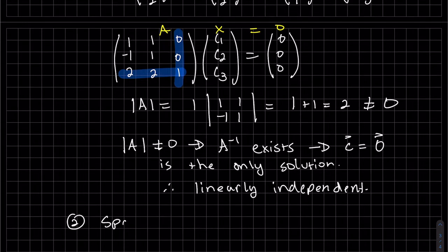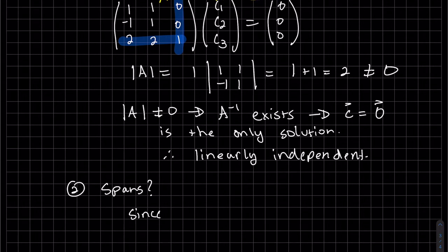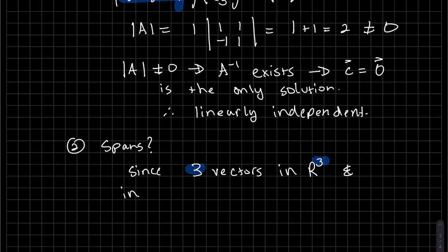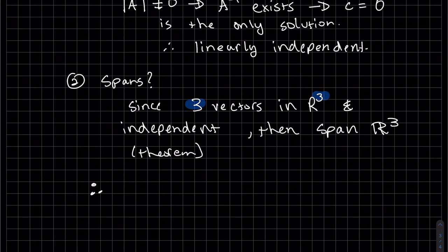Now for spanning, as I mentioned, since there's three vectors in R3, these numbers are the same, and we showed it's independent, then they span R3. And that was our theorem. Since it spans and is independent, it is a basis for R3.